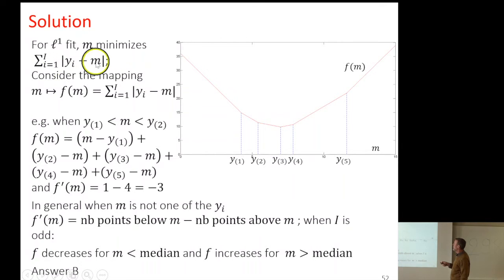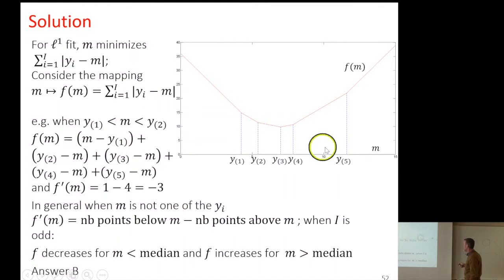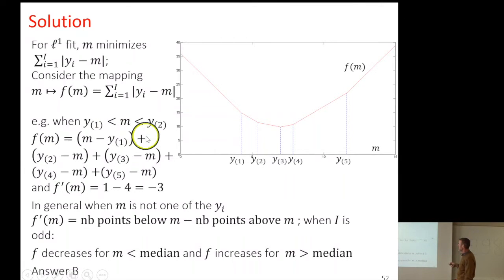We have an optimization problem in one variable M, and we need to minimize the sum of absolute values of yi minus M. To plot F of M, it's easy to do if we sort the values of Y — calling Y(1) the smallest, Y(2) the second, et cetera.